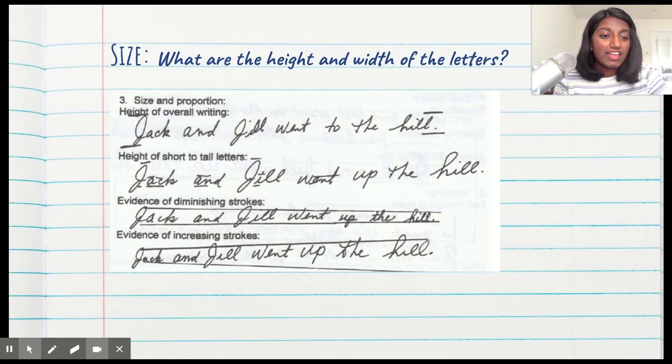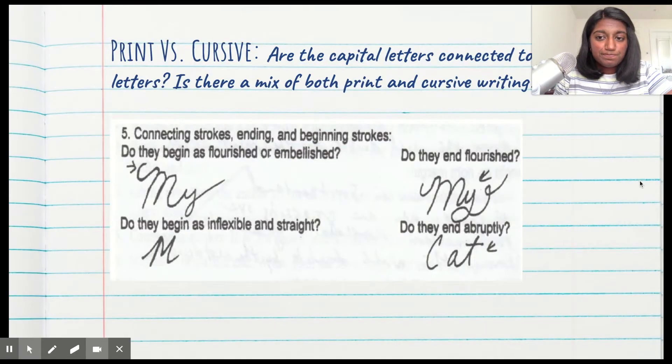Now, there are five other things that handwriting analysts use within those three categories that help them distinguish between differences in handwriting. The first thing is size—what are the height and width of the letters? As you can see here, 'Jack and Jill went to the Hill.' That's some pretty medium-sized handwriting. But something to look at is the ratio of height of short to tall letters. As you can see here, the A is maybe a little bit less than half the height of the J. Over here in Hill, however, the L should be around the same size as the H, but it's obviously not. The Ls are shorter. That would be something very distinct in the size of this person's handwriting.